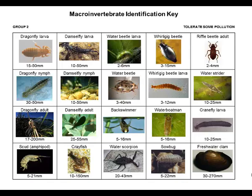Here are a number of Group 2 macroinvertebrates — those that tolerate some pollution — including dragonfly larvae, damselfly larvae, and some different beetles, both adults and larvae. Take a moment to scan through these different species. If we find crayfish, scuds, or water scorpions, all of these may indicate a moderately healthy stream. Also keep your eye on branches or vegetation around the area — if you start noticing adult damselflies or dragonflies, that may be an indicator that the overall stream health is somewhat polluted.